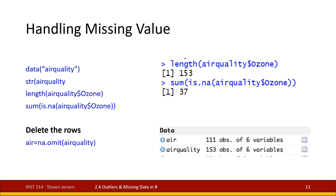Looking at some examples using the built-in air quality data in R: I call data with airquality and check the structure. Looking at the ozone variable, I use length to find it has 153 observations, then sum(is.na()) to count missing values — and it says 37. So 37 out of 153 observations are missing — that's nearly more than a fifth of your values gone.